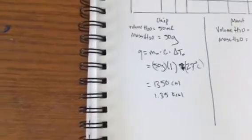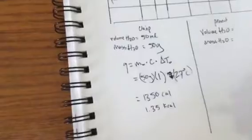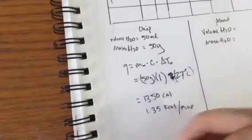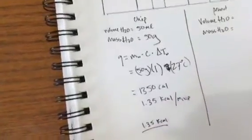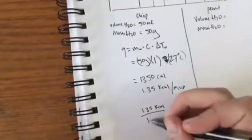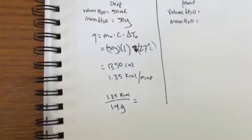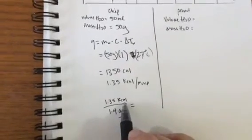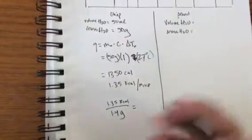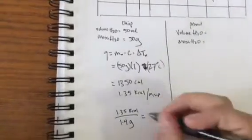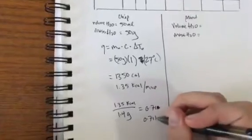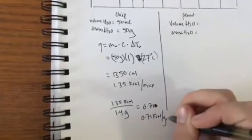So are we done? No, this is how much energy was in that much amount of chip, that's not how much energy is in all the chips in the world. We need to divide, we take that into account by dividing by the mass of the chip. We're gonna do 1.35 kilocalories of energy went into 1.9 grams of chip. So we know that by burning 1.9 grams of chip, the water gained 1.35 kilocalories of energy, which means it had to come from the chip, assuming that no heat was added from the match itself. We divide that out, you get 0.71 kilocalories per gram of chip.